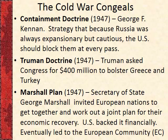The next two countries we were worried about were Greece and Turkey. Greece had been kind of a British protectorate, but Britain didn't have any money after World War II. Communist elements in Greece were starting to come close to power, and under the Domino Theory, if Greece fell, neighboring Turkey would likely follow. Truman asked Congress for 400 million dollars to give to Greece and Turkey to keep them on our side of the Iron Curtain.